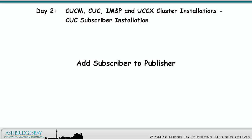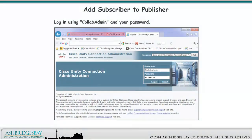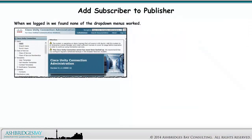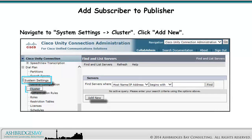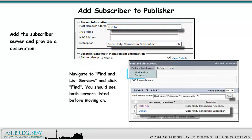First, you need to add the subscriber to the publisher. Launch your browser — we use Internet Explorer — and browse to this address. Ignore the security warning and click Continue to this website. Log in using Collab Admin, the application username and password you configured during installation. When we logged in, we found none of the drop-down menus worked, so we enabled Compatibility View for CUCPUB and added both the name and the IP address. Navigate to System Settings > Cluster and click Add New. Add the subscriber server and provide a description. Navigate to Find and List Servers and click Find. You should see both servers listed before moving on.